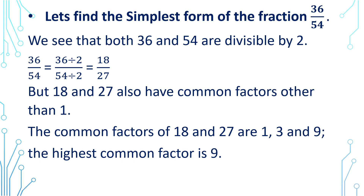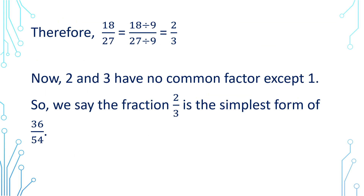We see that both 36 and 54 are divisible by 2. After dividing, we get 18 by 27. But 18 and 27 also have a common factor other than 1. The common factors of 18 and 27 are 1, 3, and 9. The highest common factor is 9. Therefore, dividing 18 by 27 by their HCF of 9, we get 2 by 3. Now 2 and 3 have no common factor except 1, so 2 by 3 is the simplest form of 36 by 54.